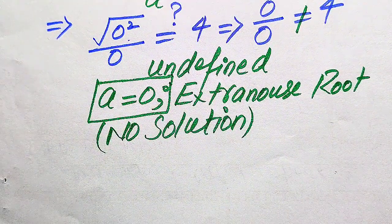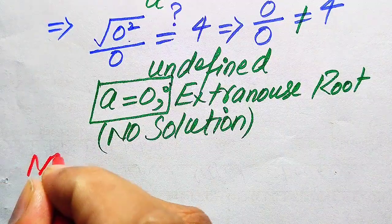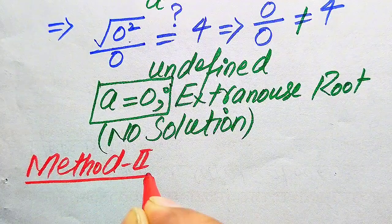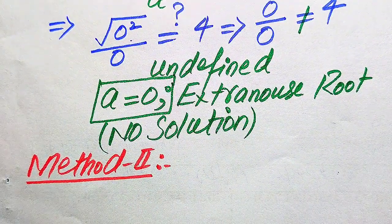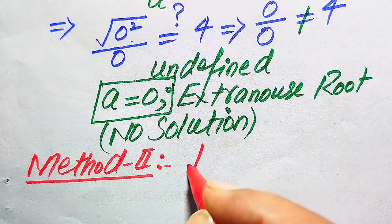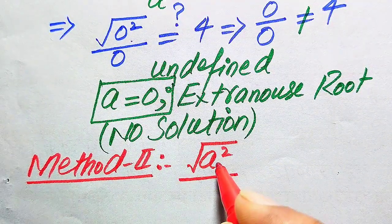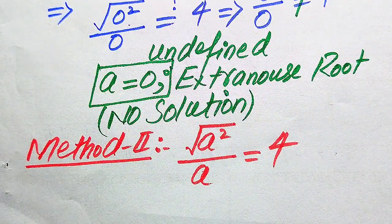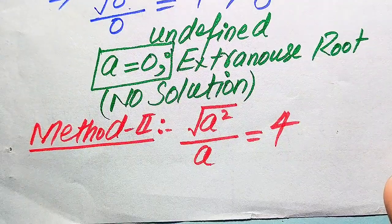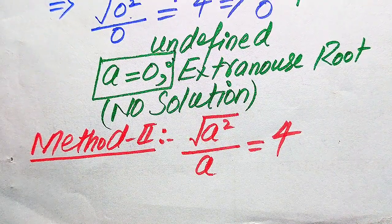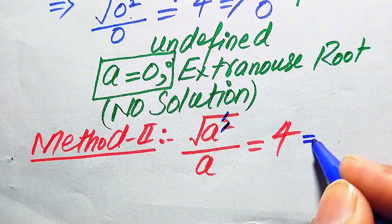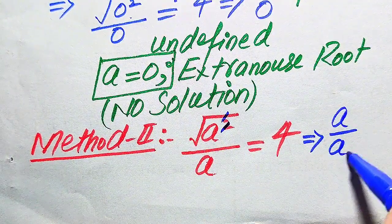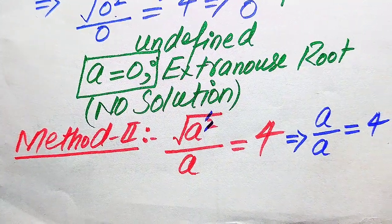Now we solve this problem using the second method — a quicker approach. We copy down the given equation: √(a²) / a = 4. Here, √(a²) simplifies to a (the square and square root cancel), so the left-hand side becomes a divided by a.